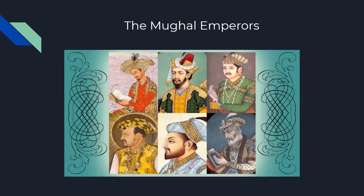These are the six Mughal emperors — you can see the family resemblance. Top left is Babur, top middle is Humayun, top right is Akbar, lower left is Jahangir, lower middle is Shah Jahan, and the last on the lower right is Aurangzeb.